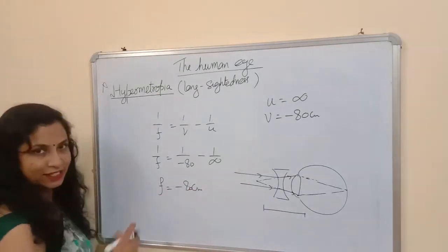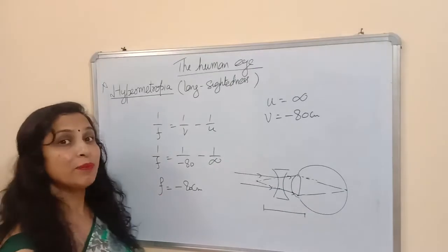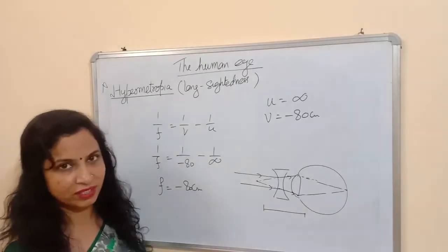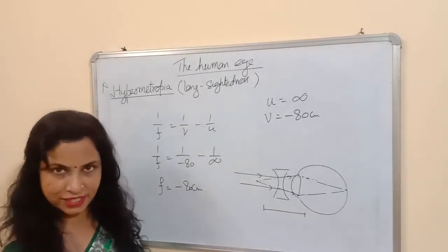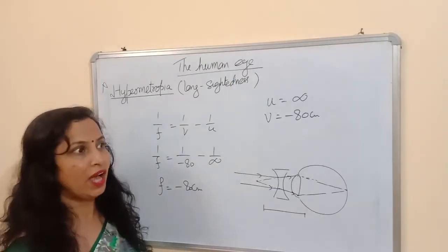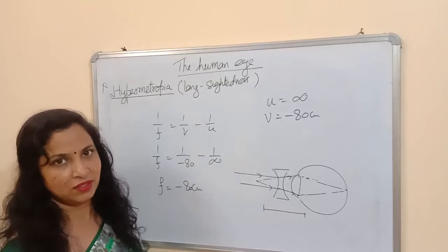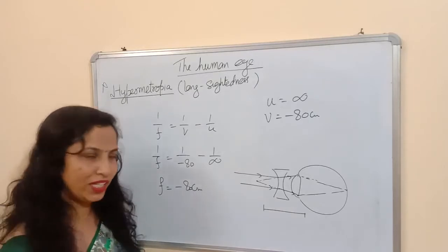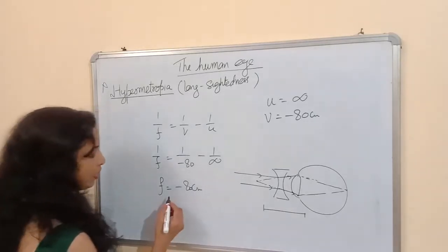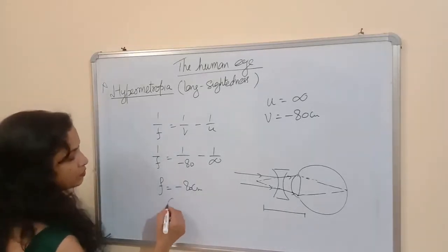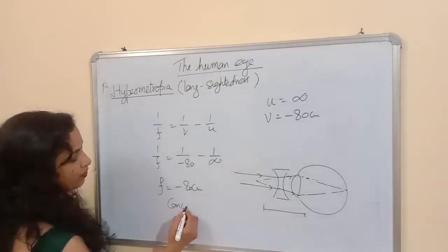What is the meaning of this negative sign? Which type of lens has a negative focal length? Obviously the concave lens. So we will use a concave lens to correct this defect of vision.